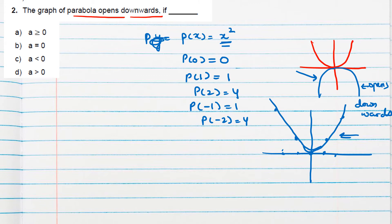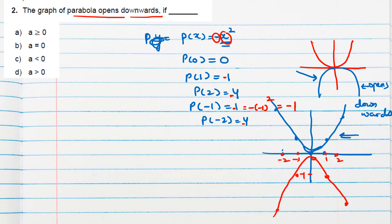Now if I change the sign to -x², I will get just a reverse graph. p(0) = 0, p(1) = -1, p(2) = -4, p(-1) = -1, p(-2) = -4 because the minus sign is already there. So if x = 1 I get -1, x = 2 gives -4, x = -1 gives -1, x = -2 gives -4. Joining these points gives a parabola which opens downward.